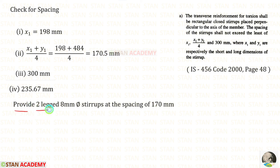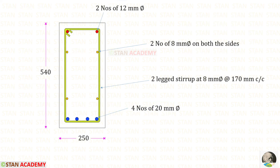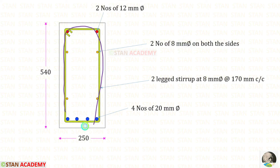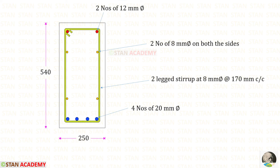Here you can see the reinforcement details. In the tension zone, we have provided four numbers of 20 millimeter diameter bars. In the compression side, we have provided two numbers of hanger bars of 12 millimeter diameter. For torsion on both sides, we have provided two numbers of 8 millimeter diameter bars. For the stirrups, we have provided two-legged stirrups of 8 millimeter diameter at a spacing of 170 millimeter. Thank you for watching this video.